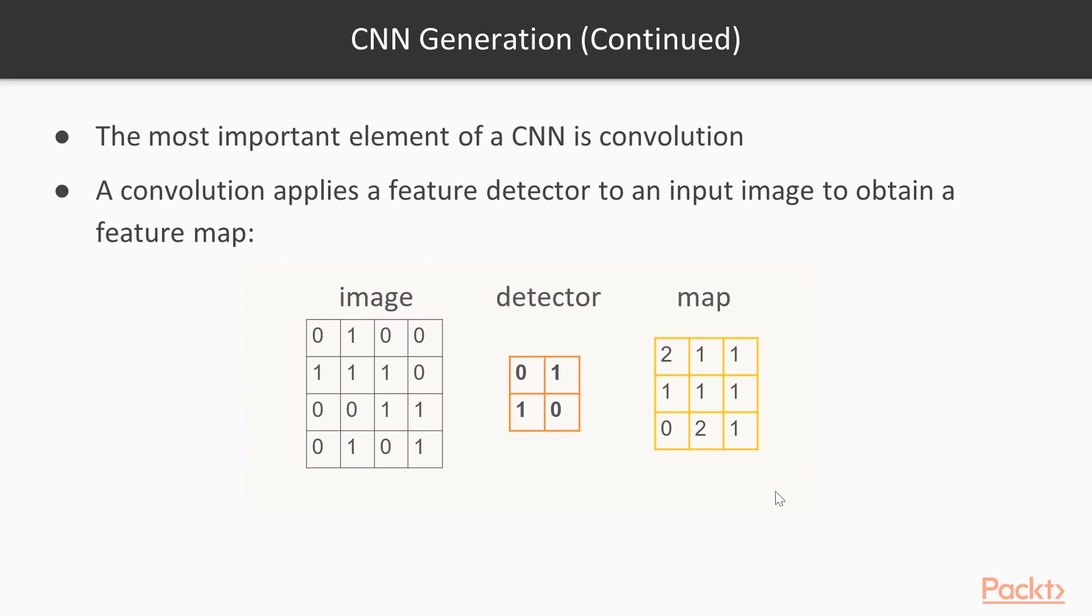And you might think that this feature map loses information. That is true, but the hope is that it will lose the unnecessary information and that it will keep the higher level information that is more useful to classification.